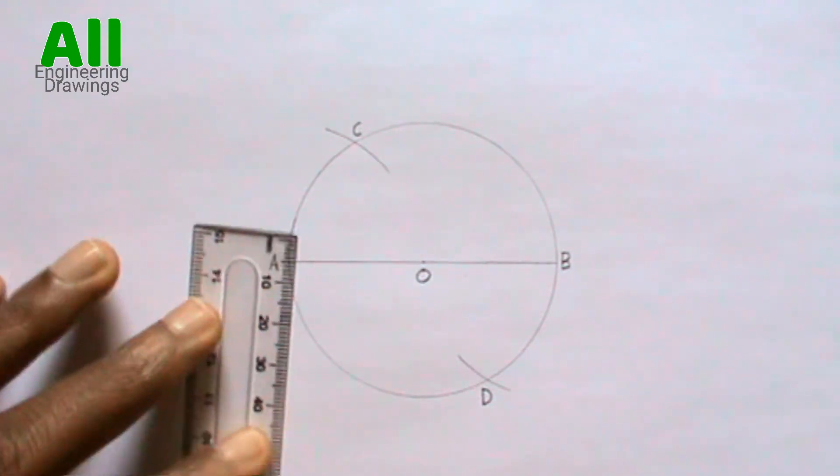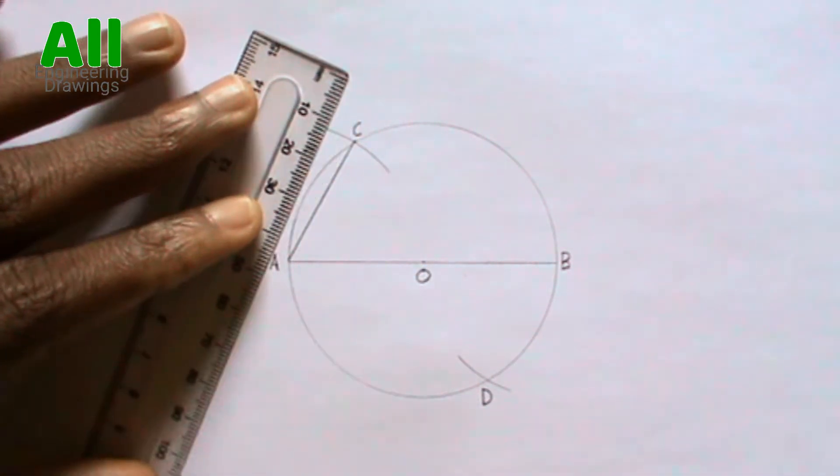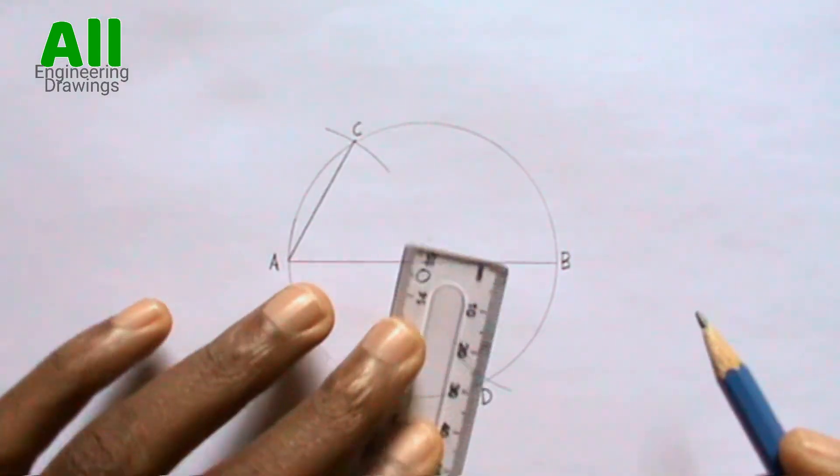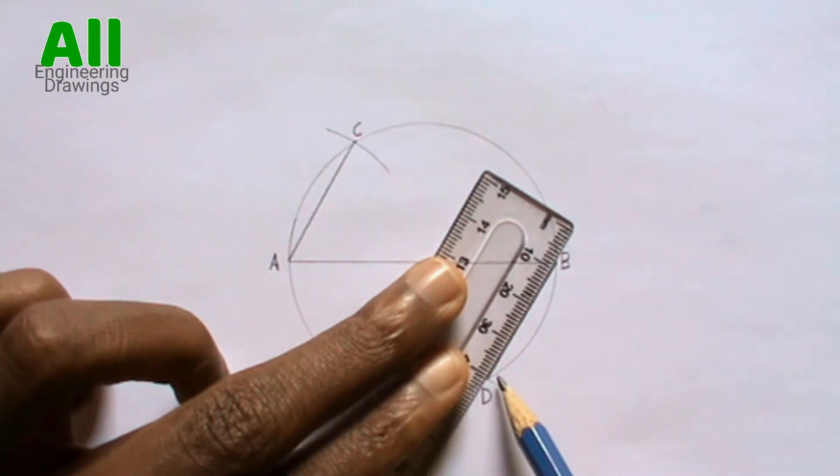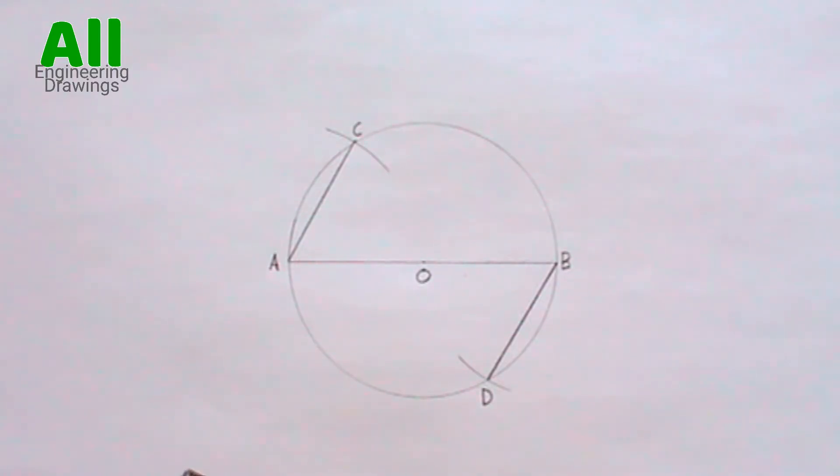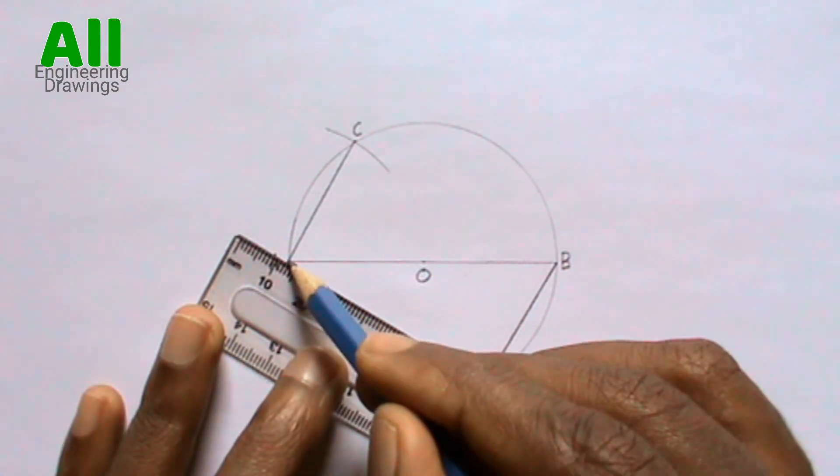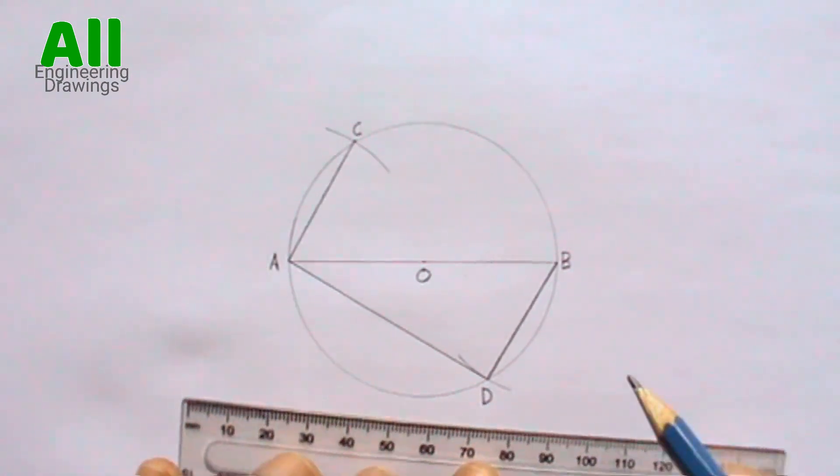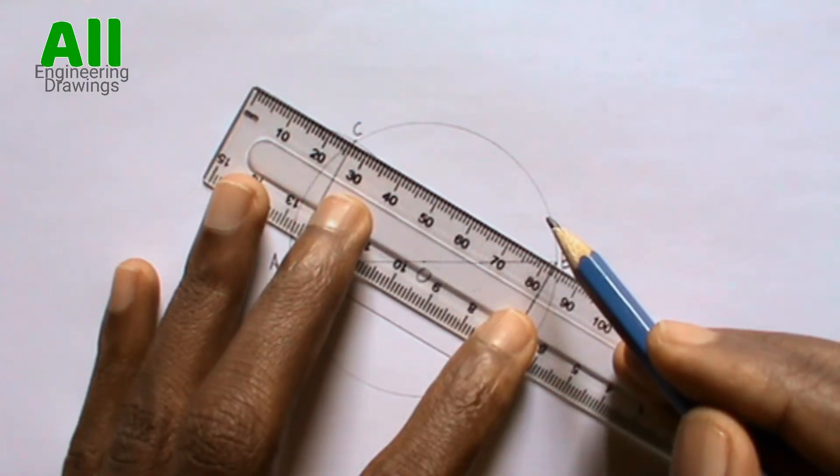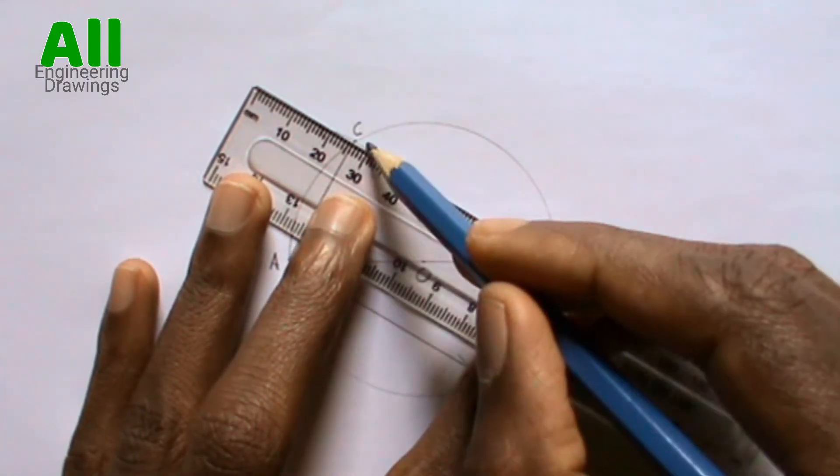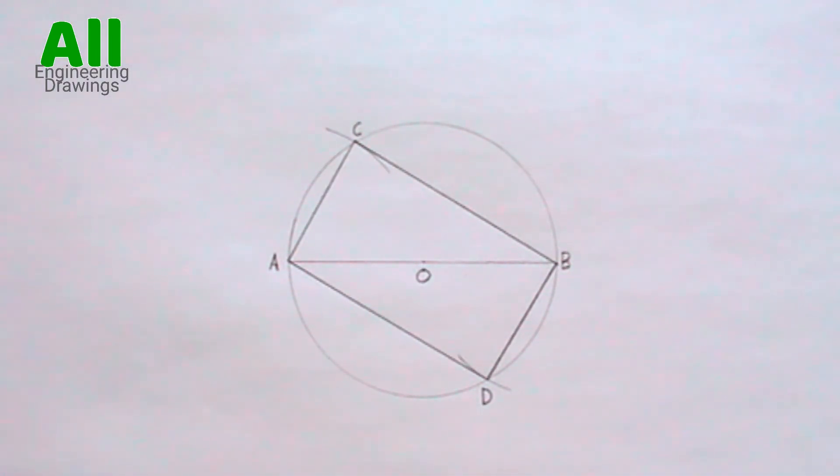Now draw a line to join point A and point C. Also draw a line to join point B and point D. Also draw a line to join point B and point C. The rectangle has been drawn successfully.